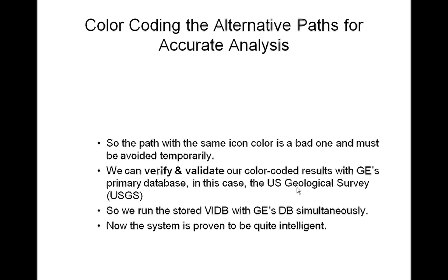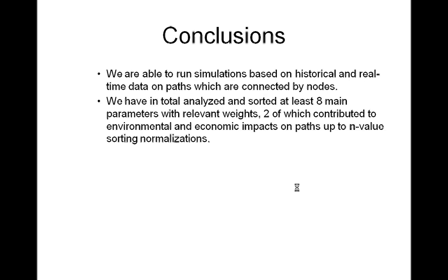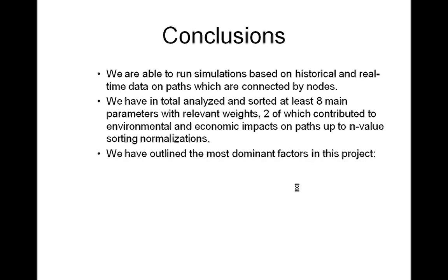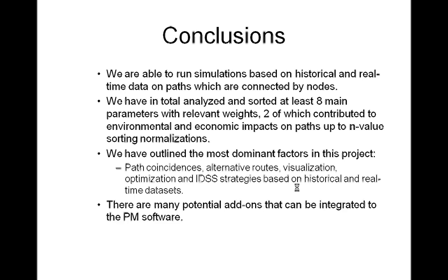The system has proven to be quite intelligent. In conclusion, we are able to run simulations based on historical and real-time data on paths connected by nodes. We have analyzed and sorted at least eight main parameters with relevant weights, two of which contributed to environmental and economic impacts on paths up to end-value sorting normalizations. The most dominant factors in this project include path coincidences, alternative routes, visualization, optimization, and intelligent decision support system strategies. In addition, there are many potential add-ons that can be integrated into the port matrix software.